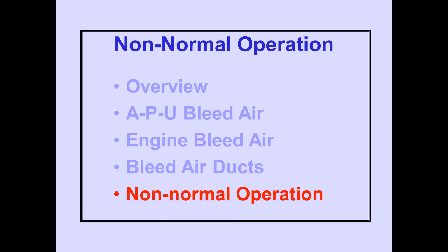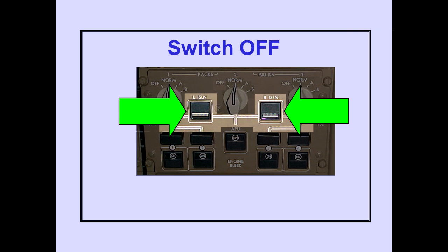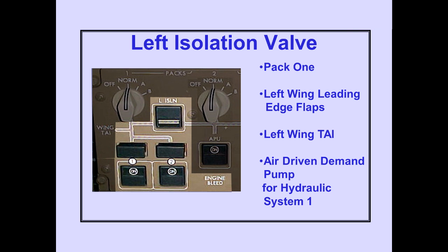We will now discuss non-normal operation. Pushing a left or right isolation valve switch off closes the respective isolation valve. With the left isolation valve closed, pack one, the left wing leading edge flaps, the left wing thermal anti-ice duct, and the air-driven demand pump for hydraulic system one are isolated from the rest of the duct system.